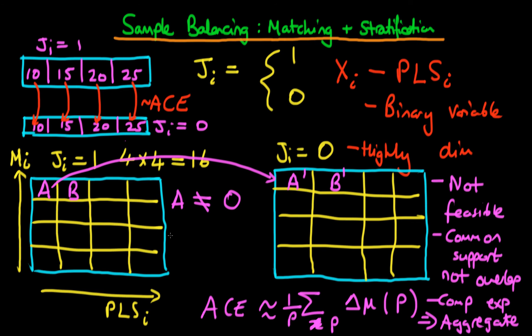So I hope I've illustrated the problems inherent with stratifying a data sample and matching across subgroups in treated and untreated populations — mainly that this may not be feasible for highly dimensional data. What we're going to see in the next few videos is that by matching across a propensity score, this provides a means of removing this highly dimensional aspect of the data and still allowing us to come up with estimates of the average causal effect.